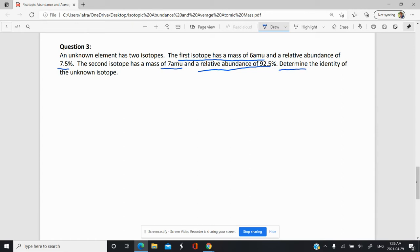So that's really your question here, that's your purpose of the question, to determine the identity of the unknown isotope. Basically what element are you dealing with? And we've given you enough information to find an average atomic mass, and you can use that average atomic mass and your periodic table to hone in on which element you're talking about.